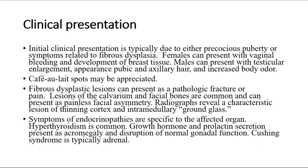For clinical presentation, findings are typically due to either precocious puberty or symptoms related to fibrous dysplasia. Females can present with vaginal bleeding and development of breast tissue. Males can present with testicular enlargement, appearance of pubic and axillary hair, and increased body odor. Café au lait spots may be appreciated. Fibrous dysplastic lesions can present as a pathologic fracture or pain. Lesions of the calvarium and facial bones are common and can present as painless facial asymmetry. Radiographs reveal a characteristic lesion of thinning cortex and intramedullary ground glass.